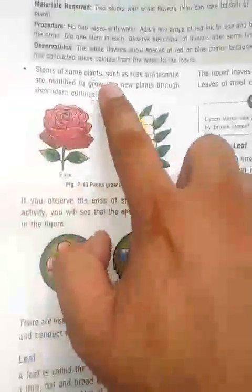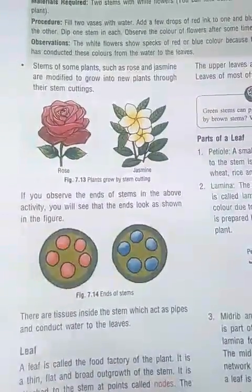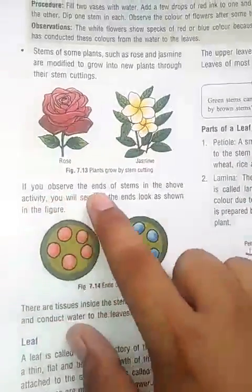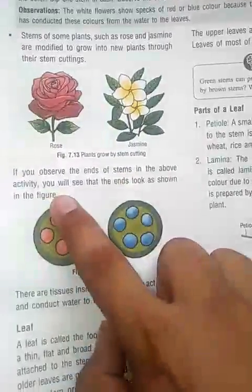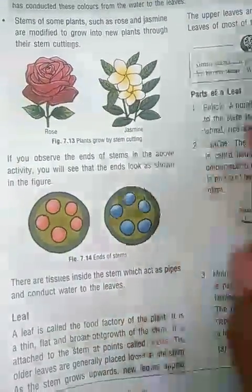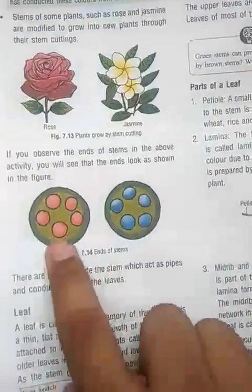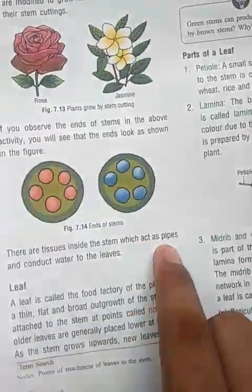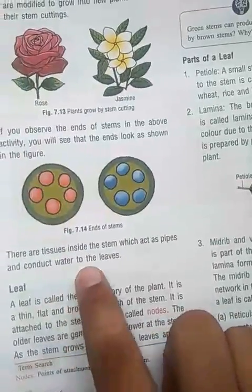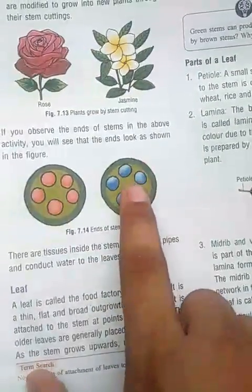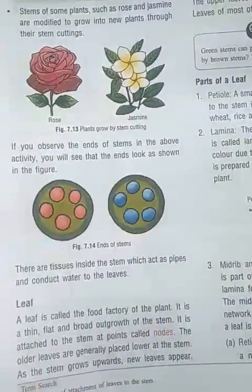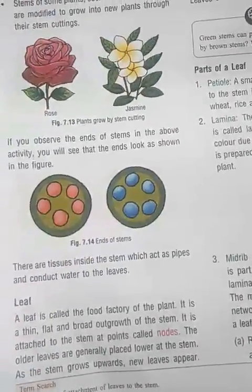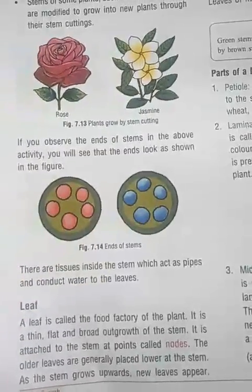Stems of some plants such as rose and jasmine are modified to grow into new plants through stem cuttings. If you observe the cut end of a stem, you will see tube-like tissues inside the stems which act as pipes and conduct water to the leaves. These are vessels which transport water, food, and minerals from the soil to the leaves and other parts of the plant body.